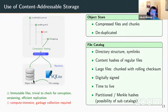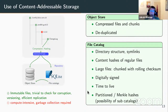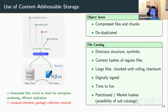The object store has compressed, chunked, and deduplicated files. The SQLite file catalogs keep track of the file system structure — directory structure, symbolic links, content hashes. They are digitally signed, have a time-to-live so clients know about updates, and use hash trees to secure the entire directory cryptographically so you don't get garbage data. This means we can use untrusted intermediate storage systems — we can even use plain HTTP rather than HTTPS.